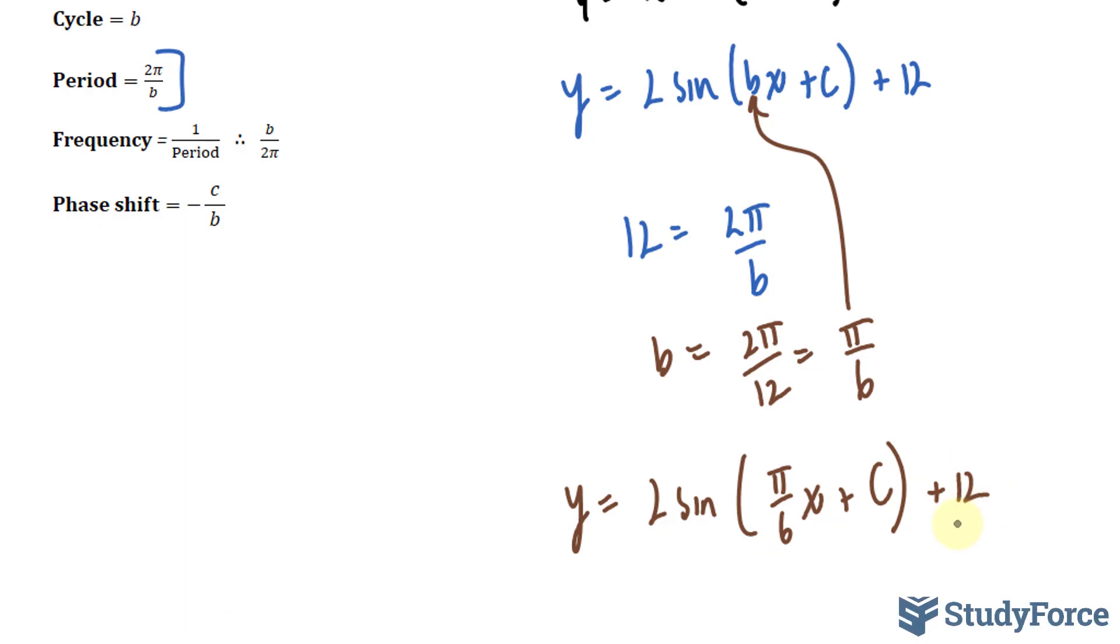Now we need to find c. c and b are both related to the phase shift, and the formula for that is here. To find the phase shift, we have to remember what a sine wave looks like without any phase shifts or translations. It starts at 0,0, makes its way up, then all the way down, and then back to where it started from.